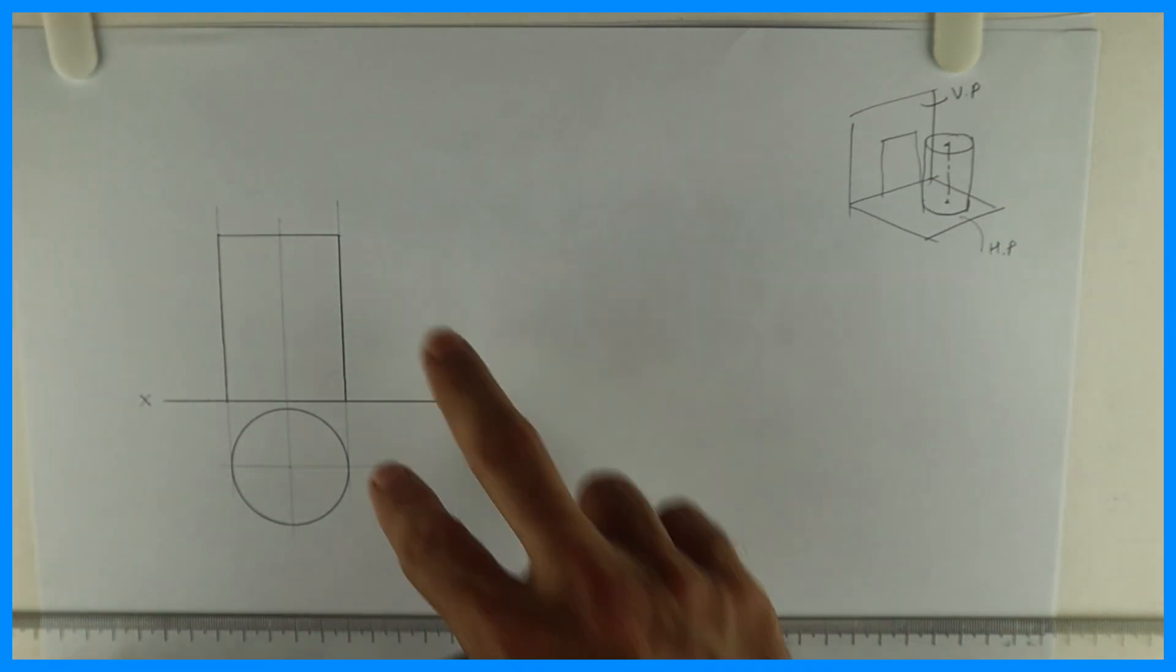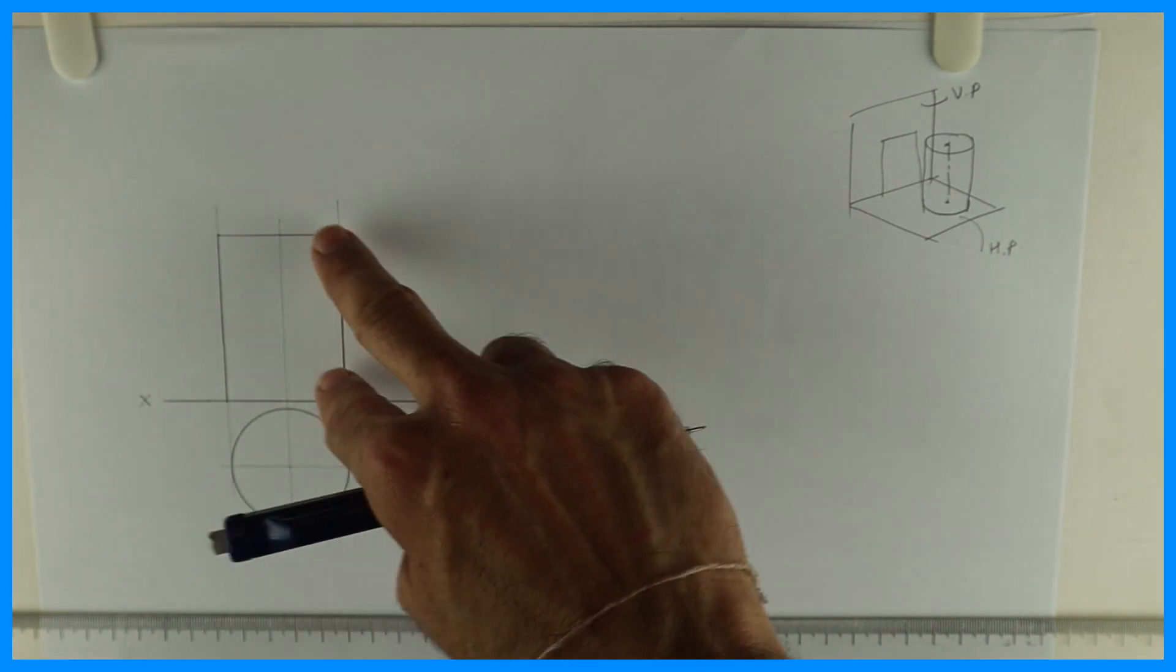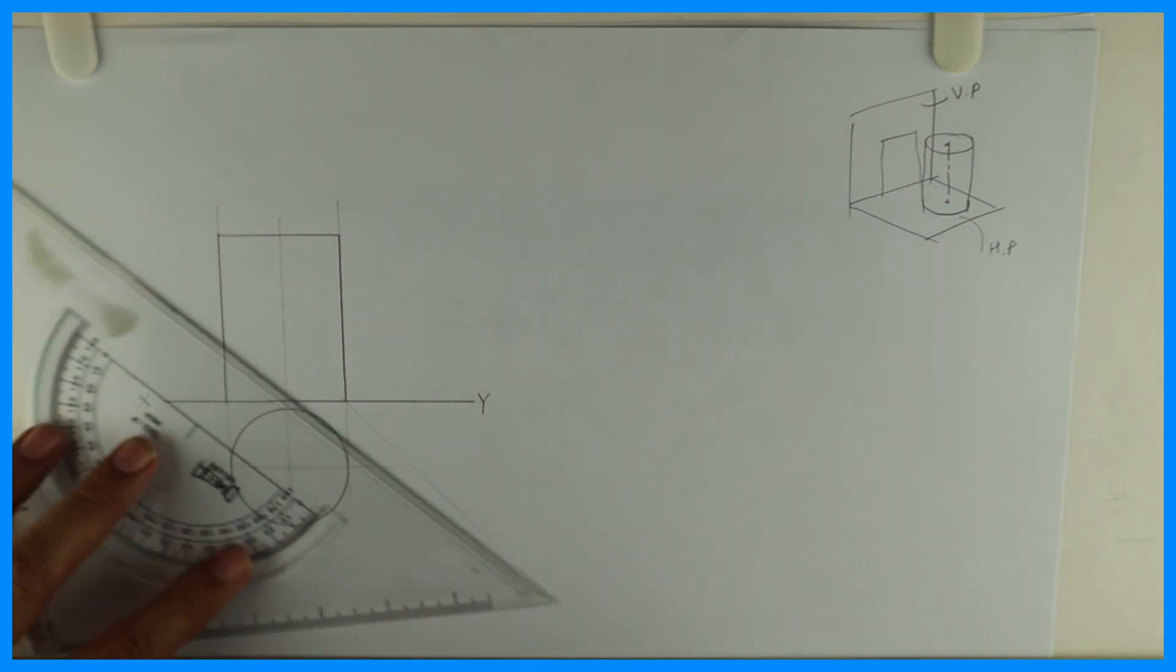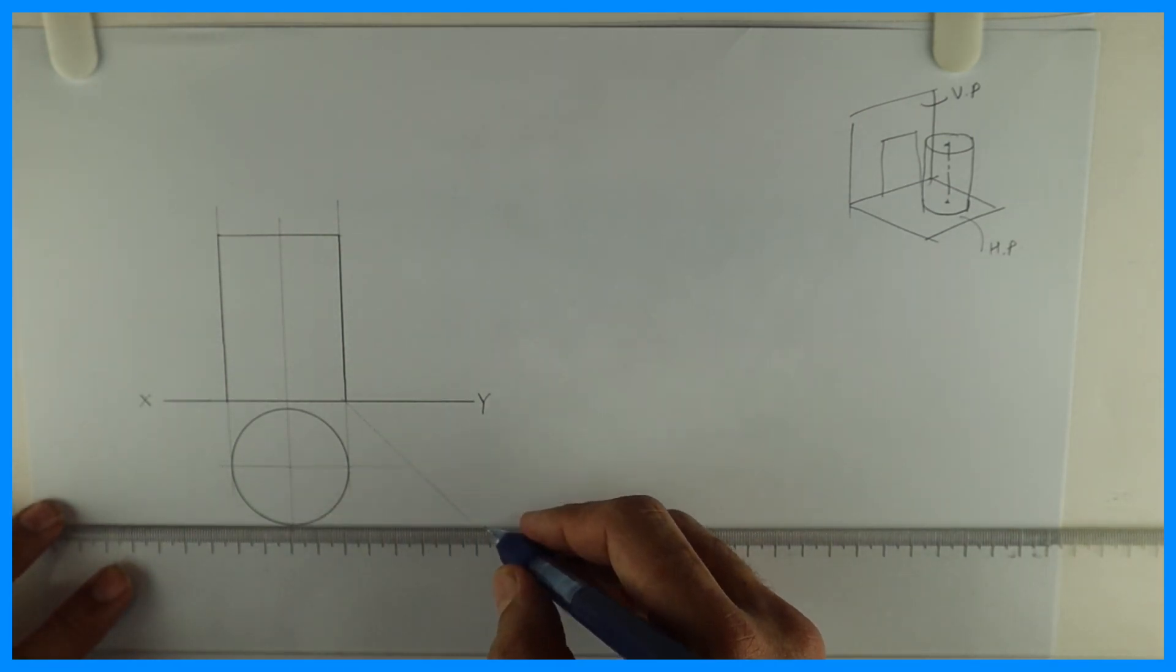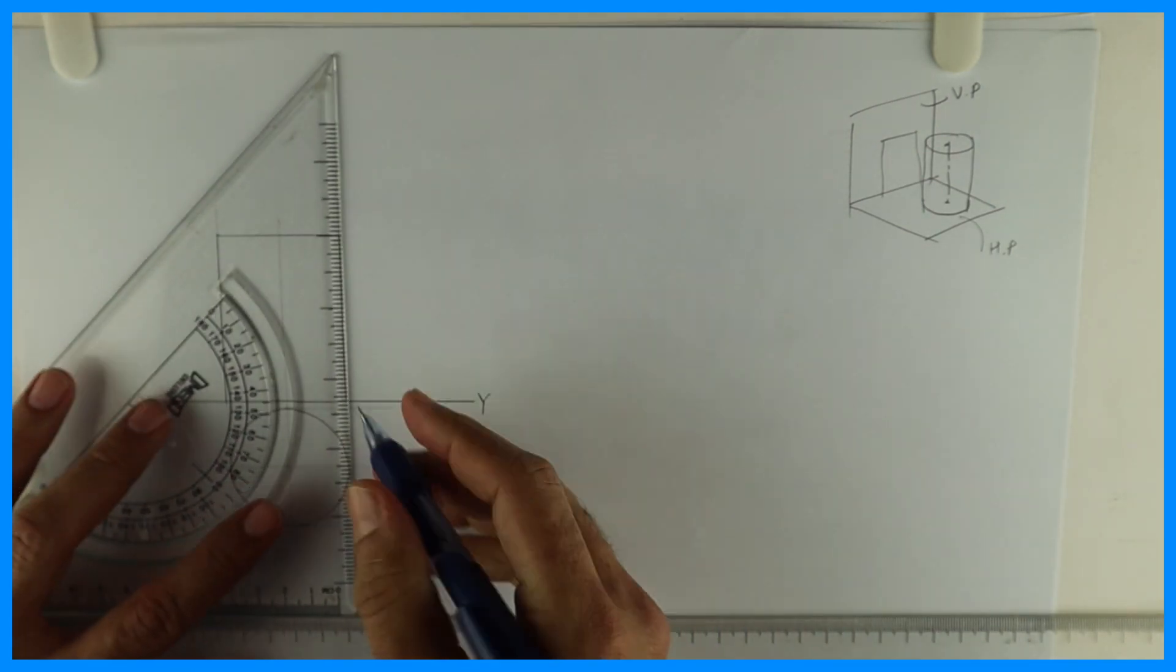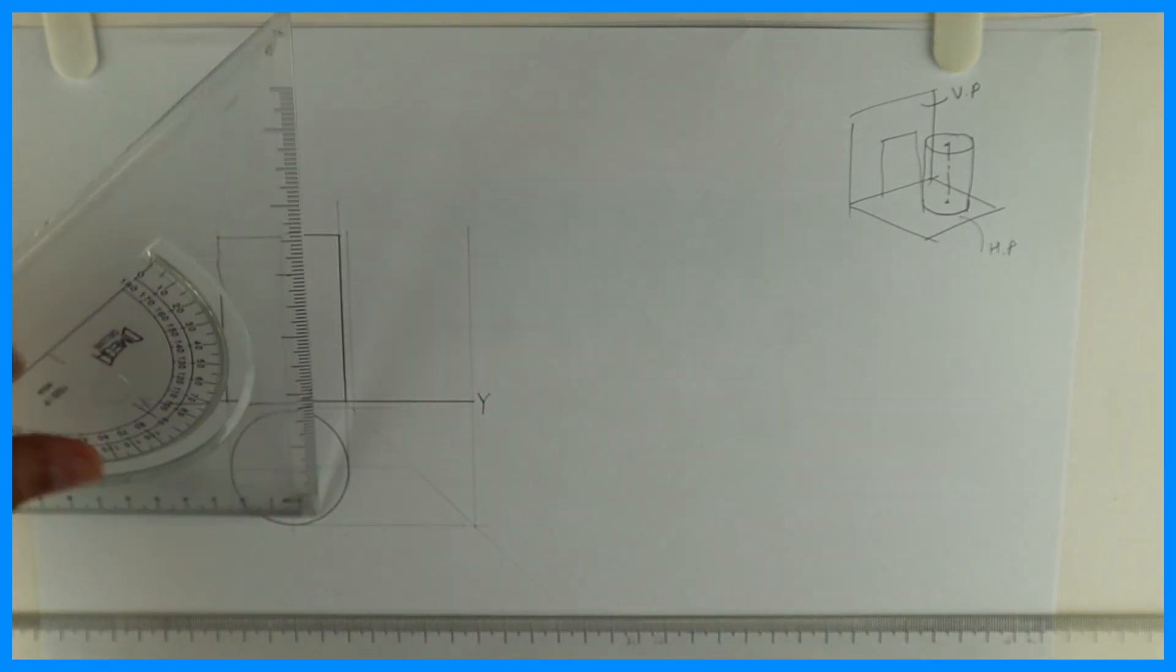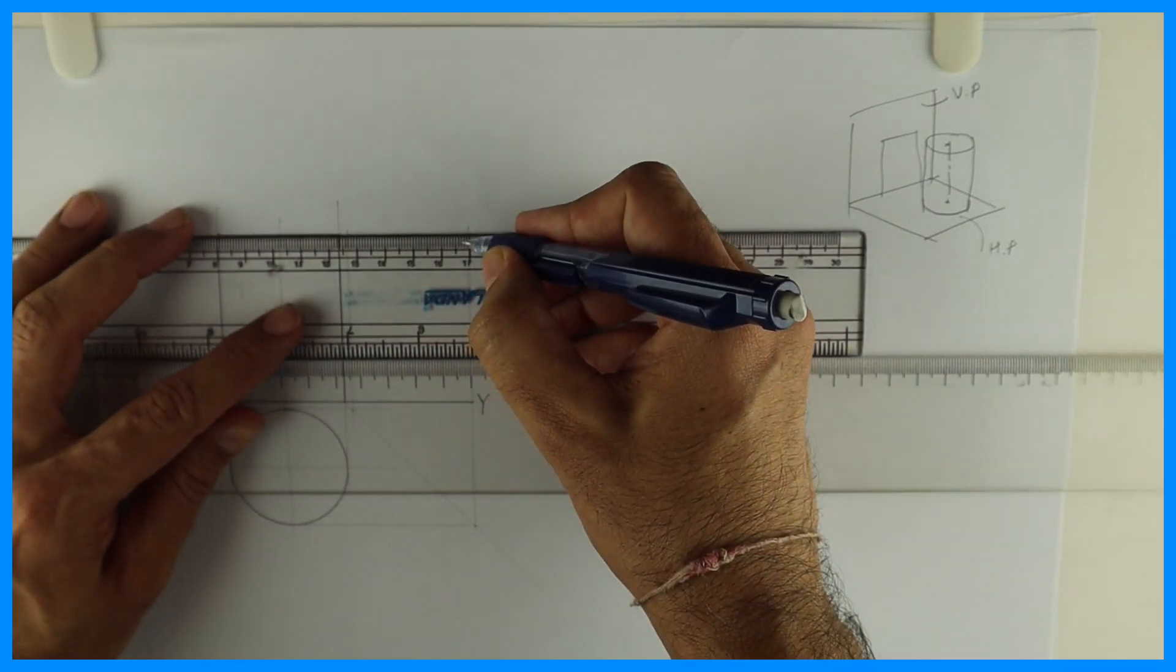Right, after this we'll draw side view. So for that we'll take height from here and for width we'll take it in top view. So we'll take 45 degree, we extend from here. So we'll get side view - side view is also rectangle. So we are done with front view, top view and left hand side view.